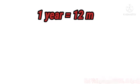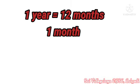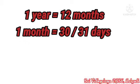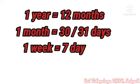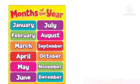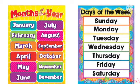1 year is equal to 12 months. 1 month is equal to 30 or 31 days. 1 week is equal to 7 days. Let's recall the months of the year and the days of the week.